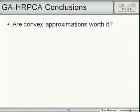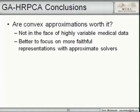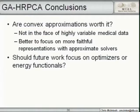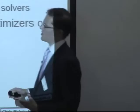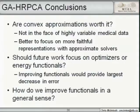We concluded that convex approximations are not worth it in the face of highly variable medical data. It is better to focus on more faithful non-convex shape representations with approximate solvers. And since the energy functional variability dominates over optimizer variability, future work should focus on improving energy functionals. That leads to the second part: weight optimization.